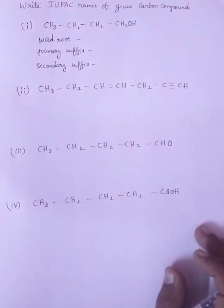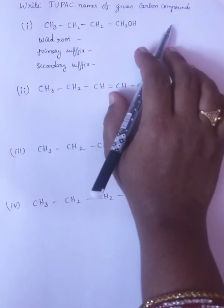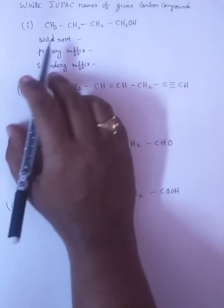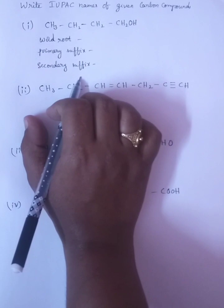Let us try to write the IUPAC names of given carbon compounds. First we have to give preference to the word root, then primary suffix, then secondary suffix.